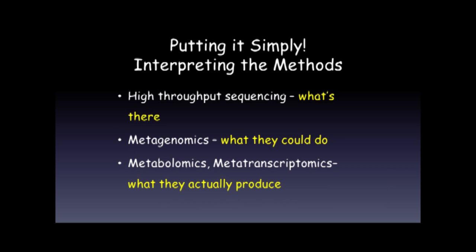To put this in the simplest way possible: high-throughput sequencing basically tells you what's there. If you use metagenomic techniques such as shotgun sequencing, that will tell you what their genetic material is and could predict their functions and what they could do. If you move on and add metabolomics or metatranscriptomics, then you're actually trying to find out what these bacteria actually produce.